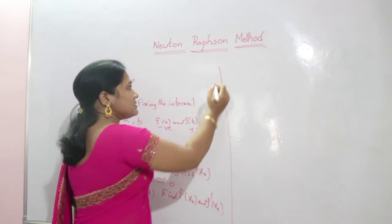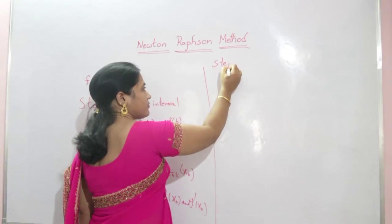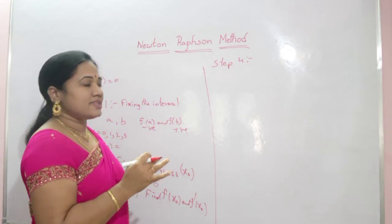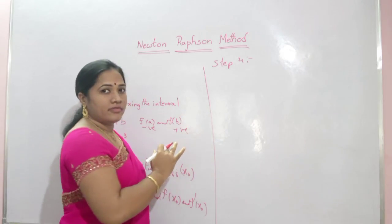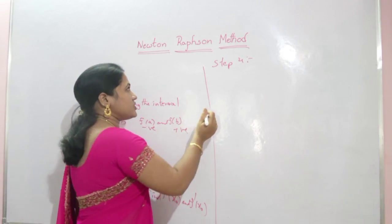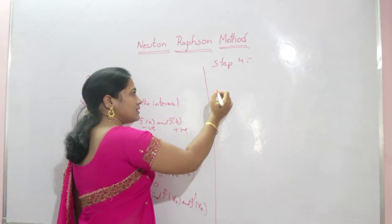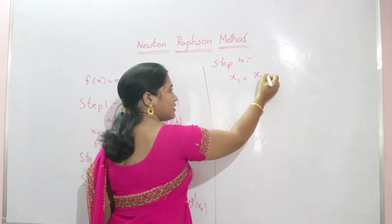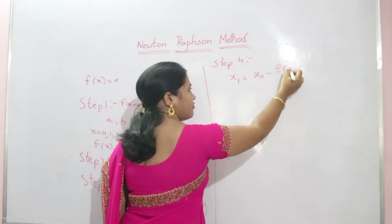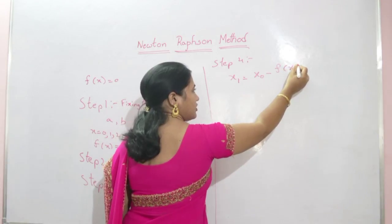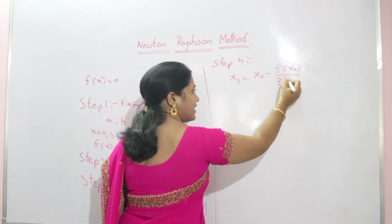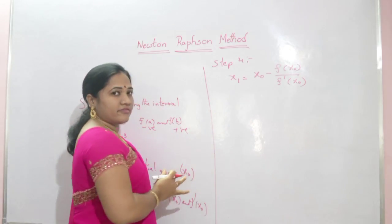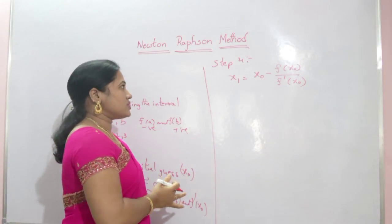Step 4 is where our approximation process will start. The formula for finding the first approximation using Newton-Raphson method is x₁ = x₀ − f(x₀) / f'(x₀). This is the formula for finding the first approximation value.